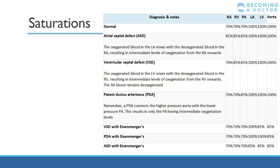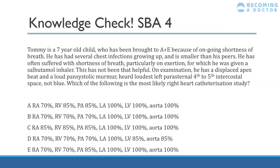In ASD with Eisenmenger's, the mixing is at the atrial level — because of an intermediate oxygenation at the left atrium level, that's the saturation that gets circulated to the systemic circulation. This saturation table is the basis for a clinical case question. Tommy is a seven-year-old brought to A&E with ongoing shortness of breath. He's had several chest infections growing up and is smaller than his peers.